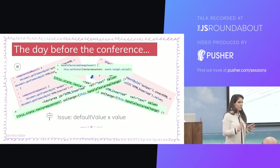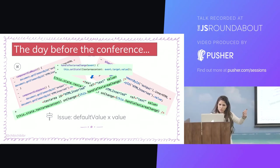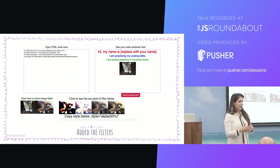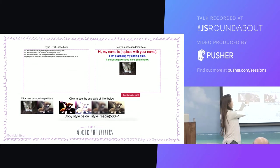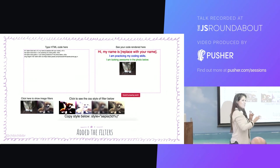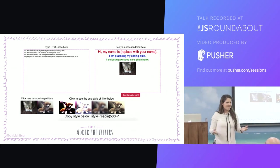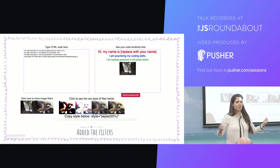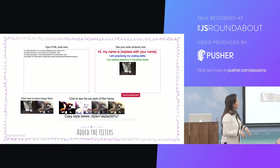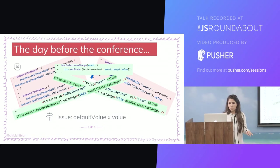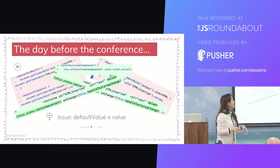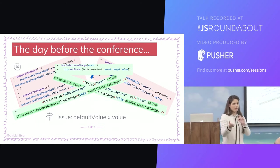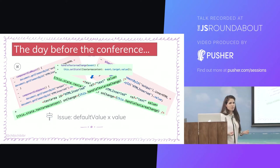Then the day before the event, things weren't working. I was using defaultValue: whatever I typed was showing in the text area, but when I chose an image it wouldn't change. If I used value instead, the images would change but the text wouldn't. I was very proud and didn't want to ask for help because it was my first project, but I just had to. I asked my friend Tomas, who is an expert, and he told me to use value while managing state properly — and then things worked. It's okay to ask for help after all.